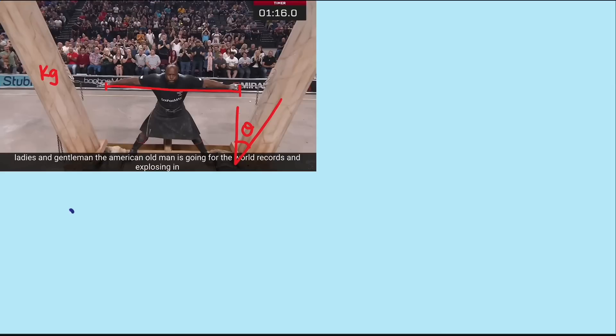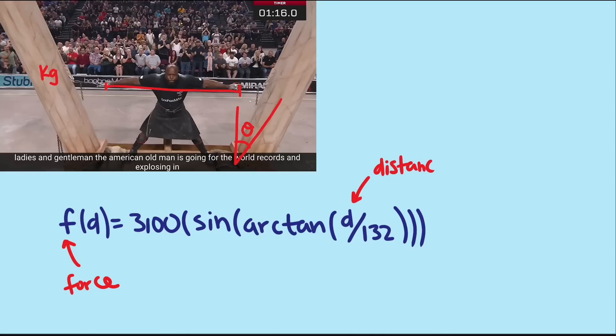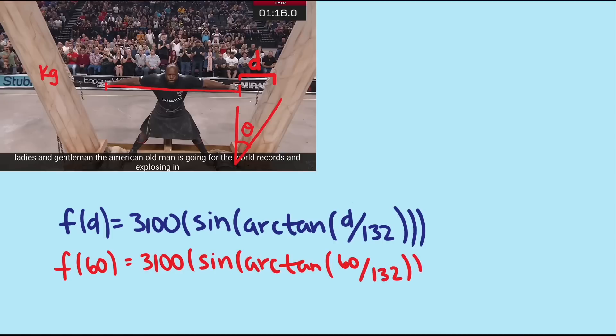Taking some measurements from an image, I developed this model to tell me the force the athlete feels based on how far out the pillars are leaning past vertical, which is measured at the height of a typical athlete's arm. So at 60 centimeters, which is about 2 feet out, the force the athlete is working against can be found by plugging 60 into this function. We get an output of 1,283 Newtons, which is about 290 pounds.